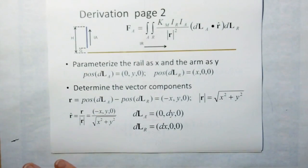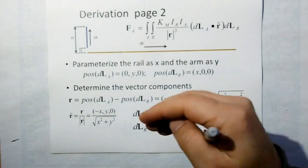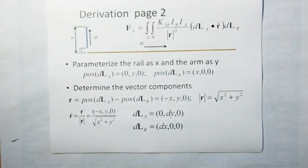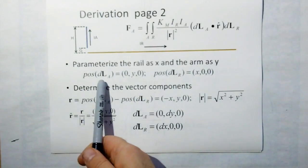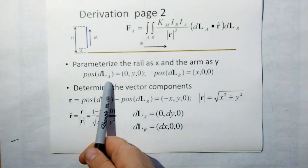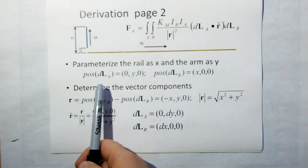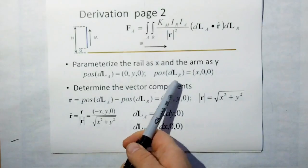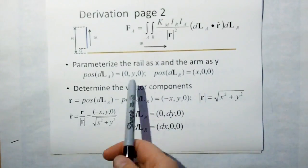Since the rails are on X we're going to parameterize the rails along X, and parameterize the armature along Y because the armature is along Y. So the position of a differential length of the armature at any point in Y is 0,Y,0 and the position of a differential length of the rail is at X,0,0.